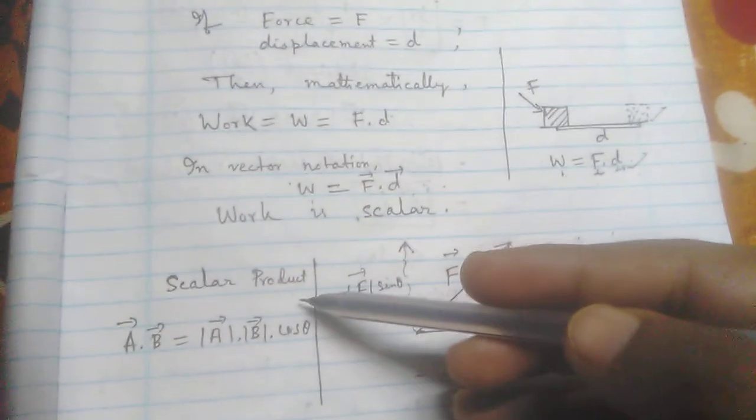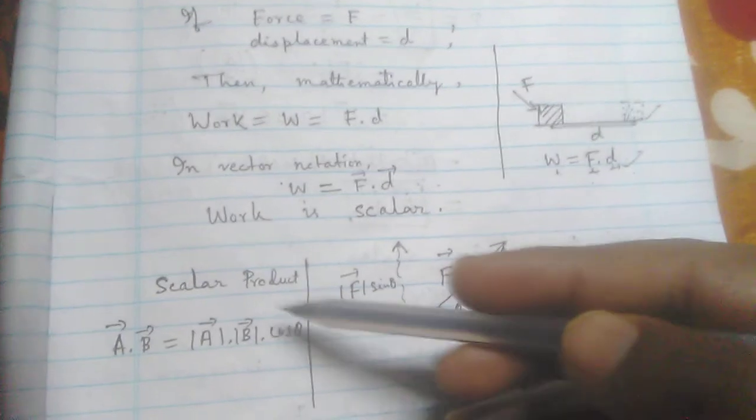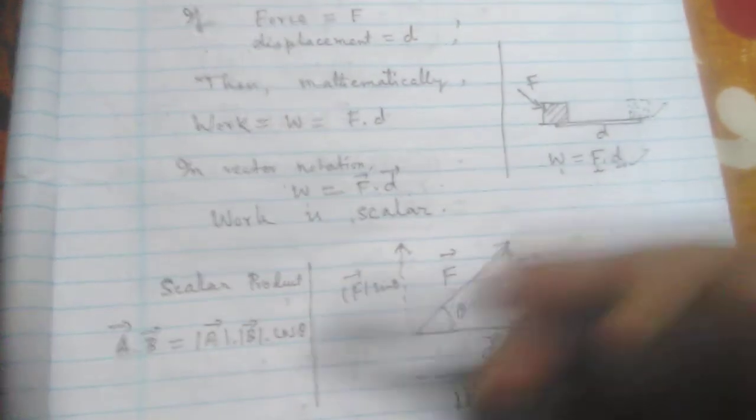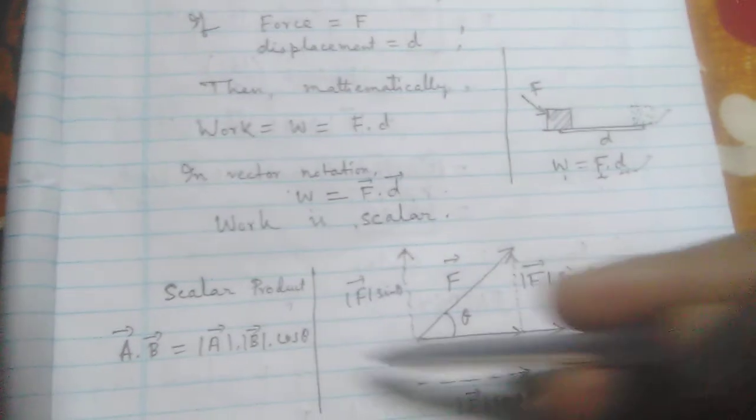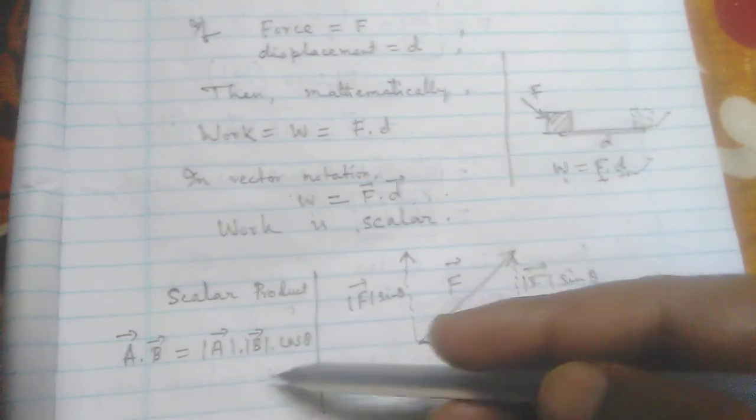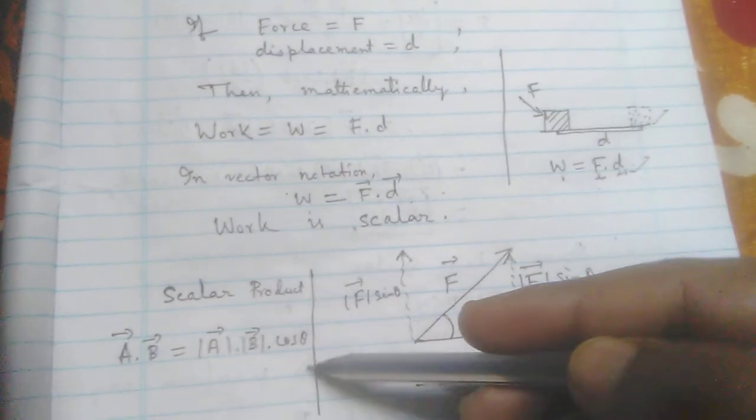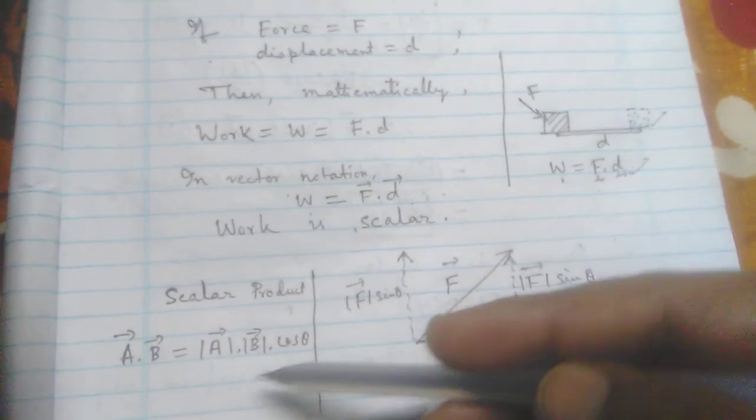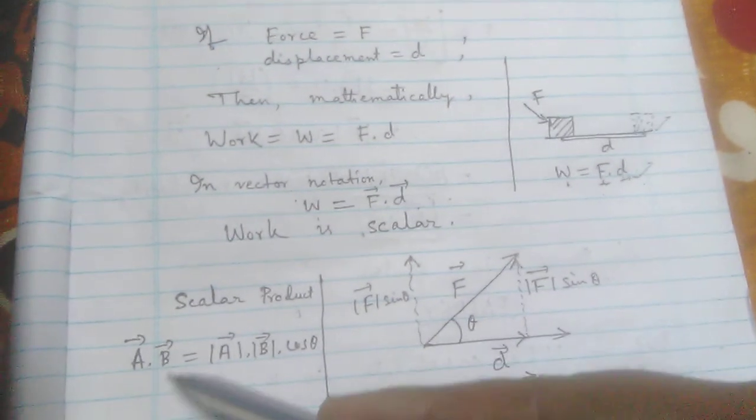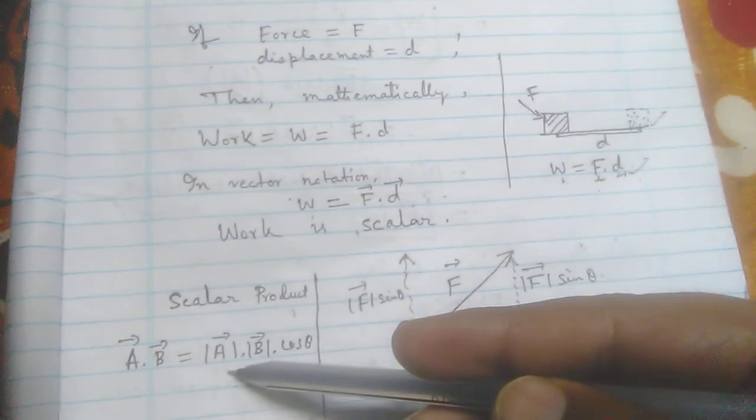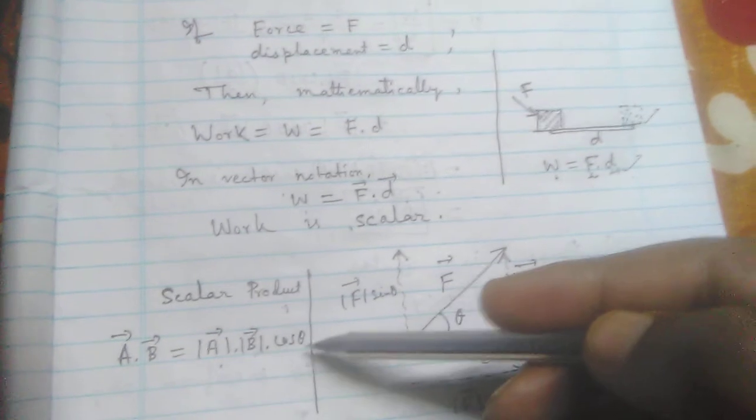I have shortly written - I am not going to discuss more about the scalar product and work here. I'll make another video to discuss what is scalar, what is vector product. Now in short I have just written: the scalar product is modulus of the first vector times modulus of the second vector times